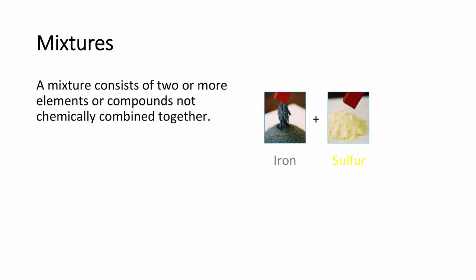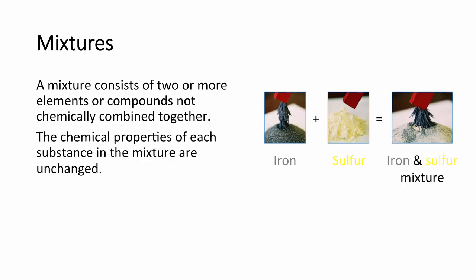Now we are going to move on and talk about mixtures. A mixture consists of two or more elements or compounds that are not chemically combined together. The chemical properties of each substance in the mixture are unchanged. For example, iron is magnetic and sulphur is not. A mixture of iron and sulphur will show that the iron remains magnetic and the sulphur is not.